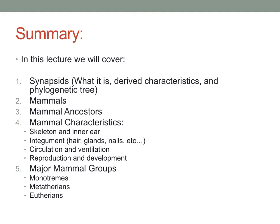In this lecture, we're going to briefly go over synapsids — what they are, what their key characteristics are — and go through a little bit of the phylogenetic tree for synapsids as an introduction to the group. Then we're going to get into mammals, the ancestral mammals, some key mammal characteristics related to their skeleton and inner ear, glands, circulation, ventilation, reproduction, and development. That'll lead us naturally into the three major groups of mammals: monotremes, metatherians, and eutherians.